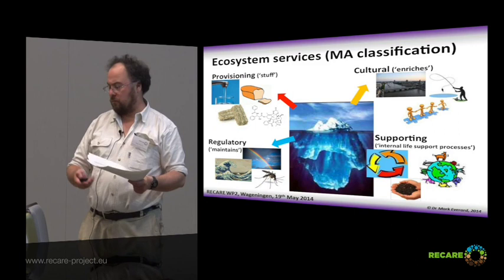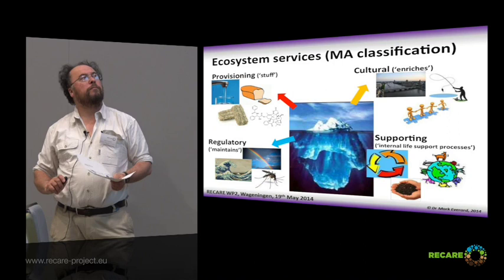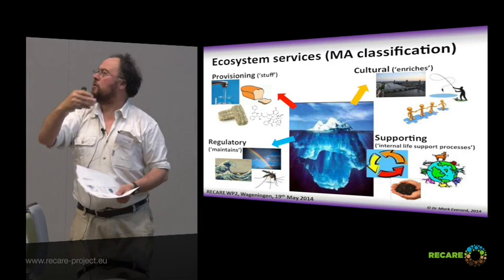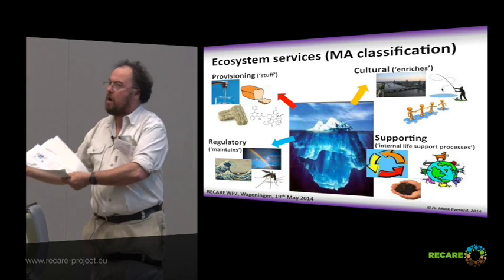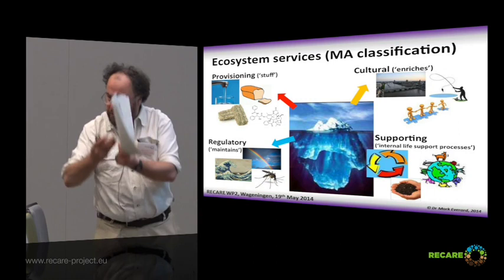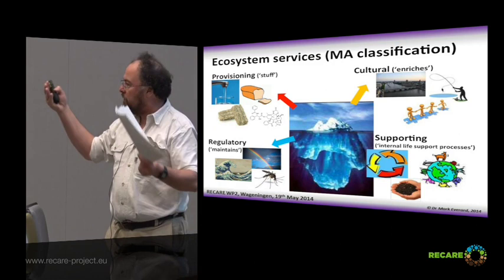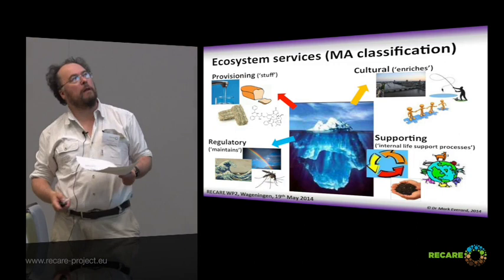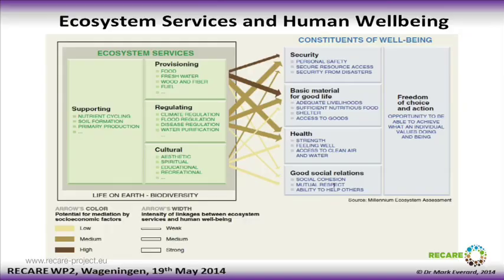I always use the analogy of the iceberg on this one. The bit at the top where the ocean line is crashing into is only one-tenth. Most of nature and the things it does aren't things we consume directly. But really the whole purpose of ecosystem services is to value this multiplicity of things — and importantly, to value what's producing it as well.